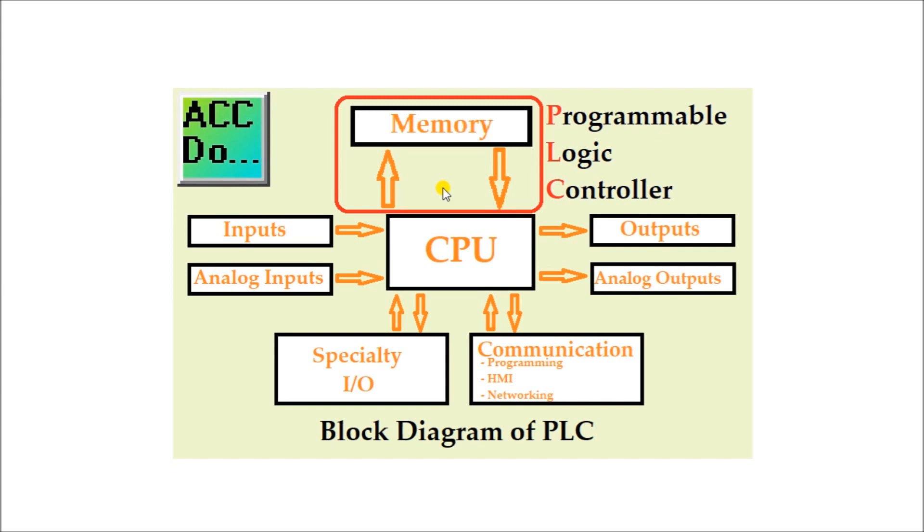The program memory consists of instructions and program code that you write. This is what is sent to the PLC processor. When you send the PLC program to the controller, it is called downloading. Sending the program from the PLC processor to the controller is called uploading.